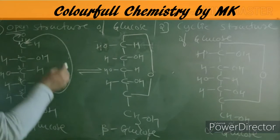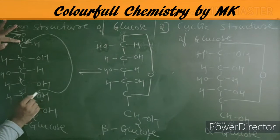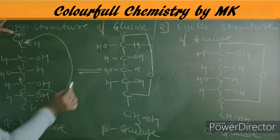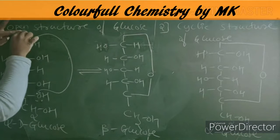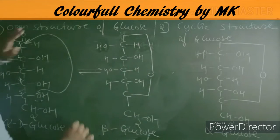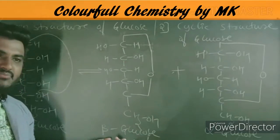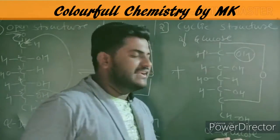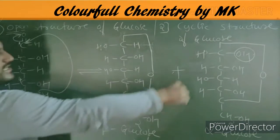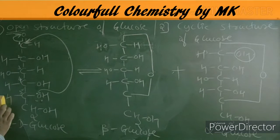When the oxygen lone pair attacks the carbonyl carbon, a negative charge forms on the oxygen, which then picks up H+ to form OH. This new OH may be on either side. If OH is on the right side, that is alpha-D-glucose; if OH is on the left side, that is beta-D-glucose.